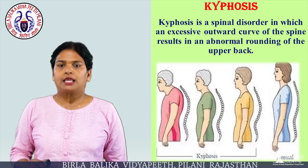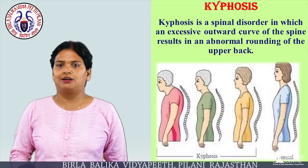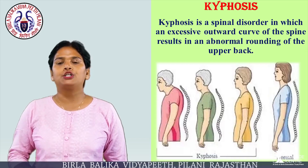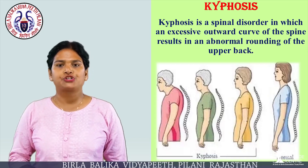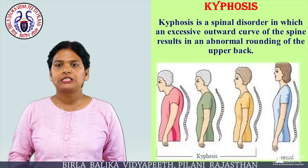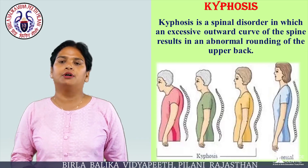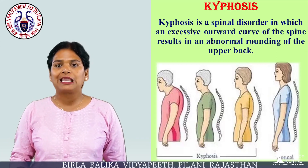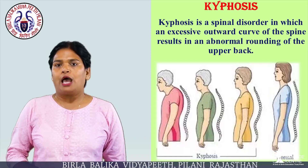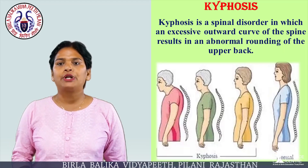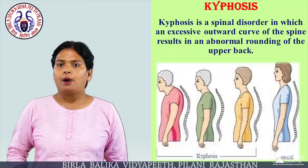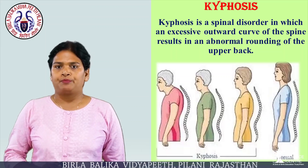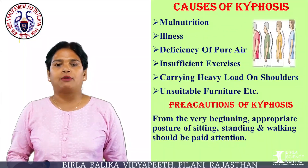Kyphosis. Kyphosis is a spinal disorder in which an excessive outward curve of the spine results in an abnormal rounding of the upper back.